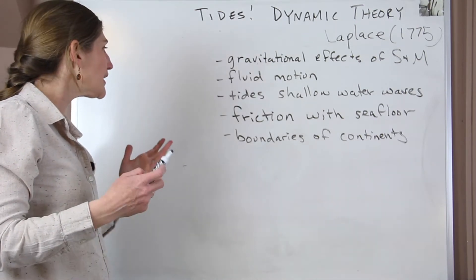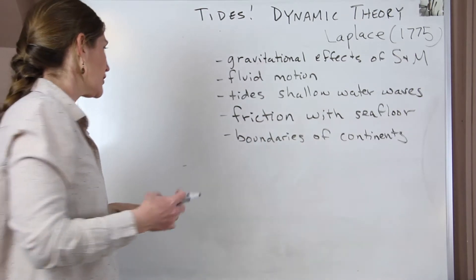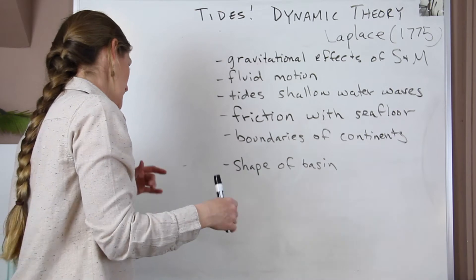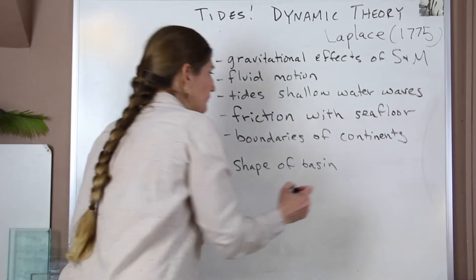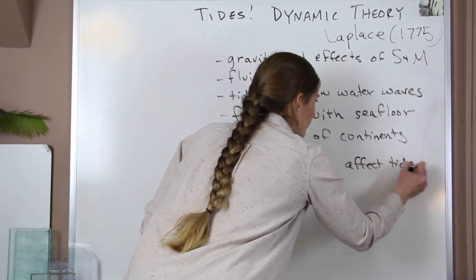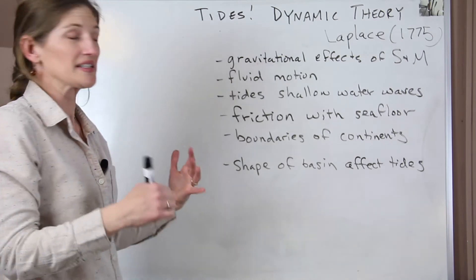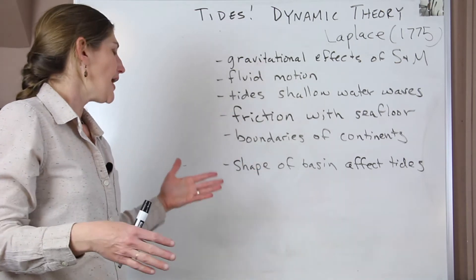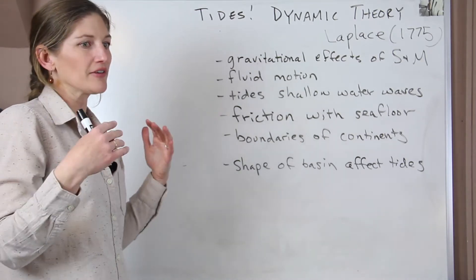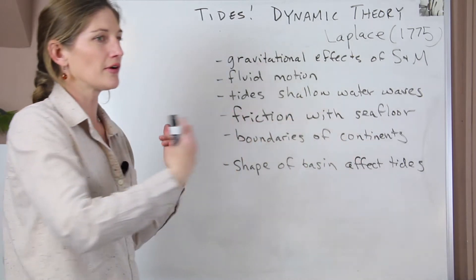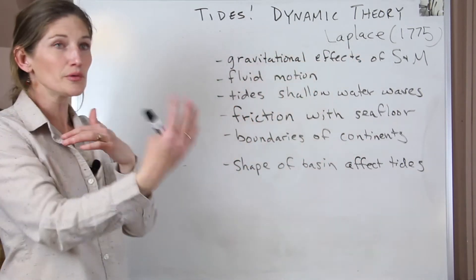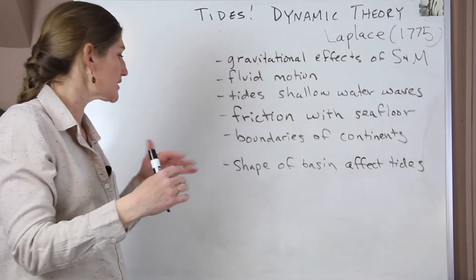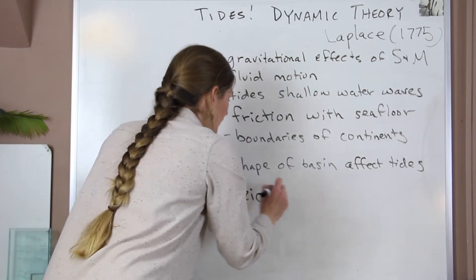The tides interact with the boundaries of our continents, the seafloor, and ultimately the shape of the ocean basin. The shape of the basin differs depending on where you are, and these shapes affect the tides. In our larger basins — the Atlantic, Pacific, and Indian Oceans — the water is moving as really big waves driven by the gravitational effect of the sun and moon, but they hit boundaries and slosh back and forth across the basins much like a seiche wave in a closed basin.